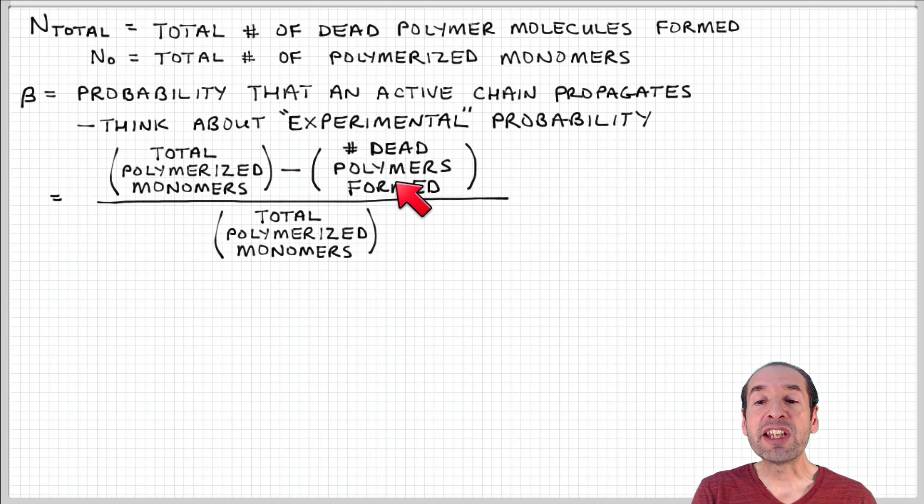If I subtract the number of dead polymers formed, I'm really subtracting termination events, because the only way that a dead chain can form is by experiencing a termination event. So what I've really expressed here is the total sum of propagation plus termination events minus the number of termination events over the total number of events. So it's expressing the same thing, the probability of propagation, but in more of an experimental framework.